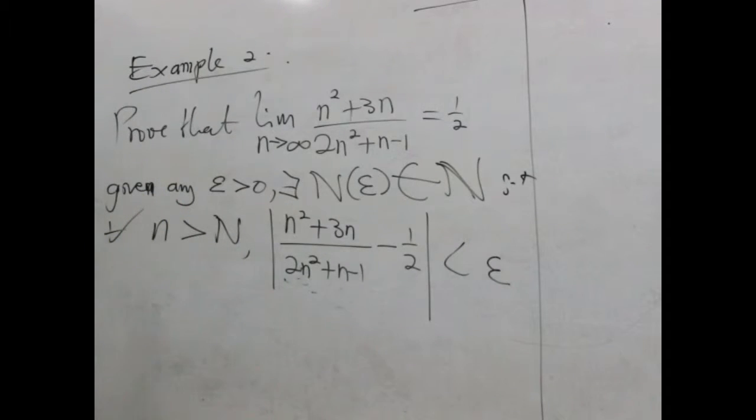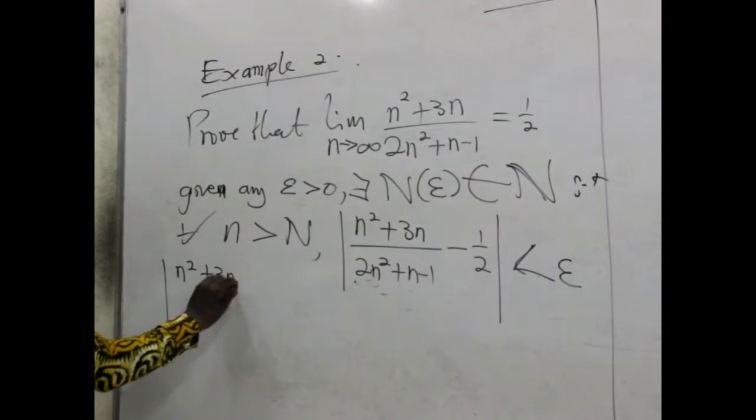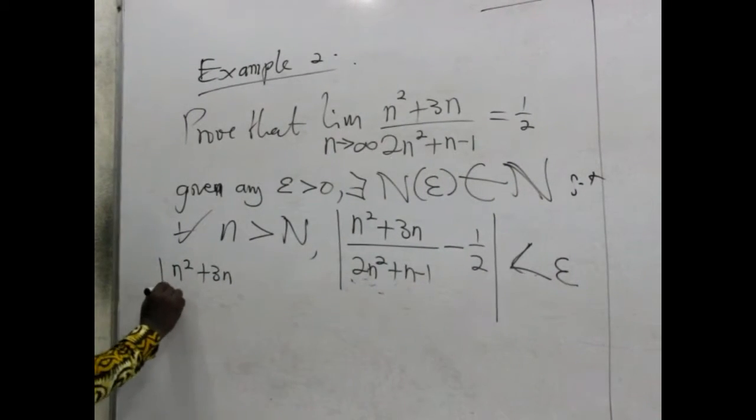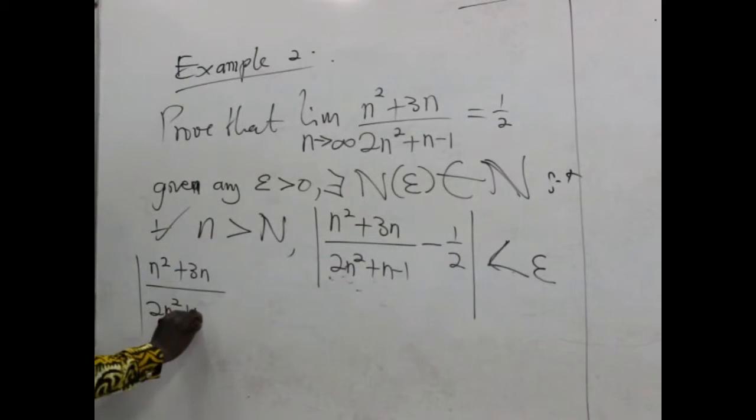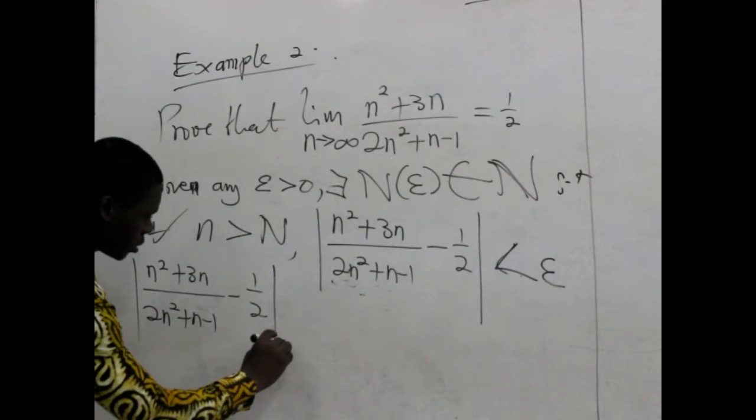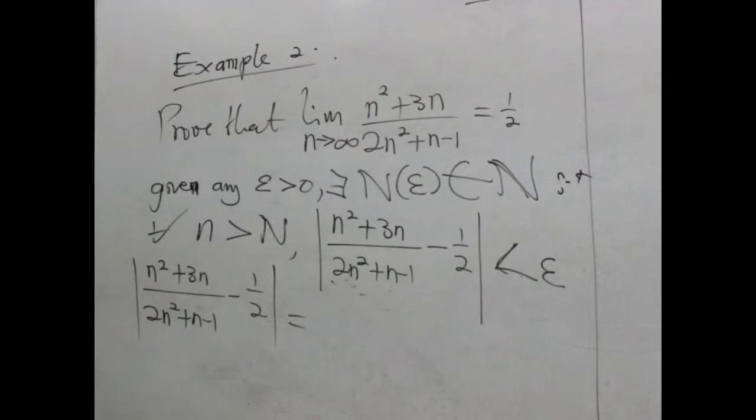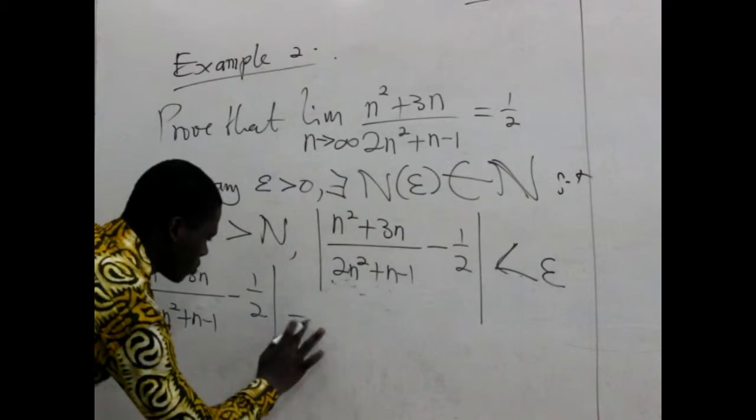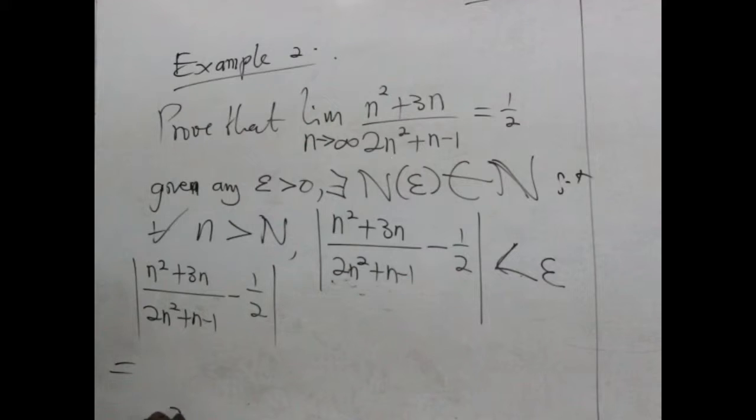Let's see how we prove that this is actually less than epsilon. So, here we have the absolute of n squared plus 3n divided by 2n squared plus n minus 1, minus half. Let's look for the LCM here. The LCM is going to be 2. We have 2, into brackets, 2n squared plus n minus 1.